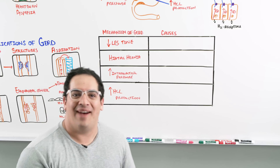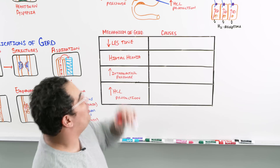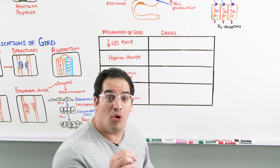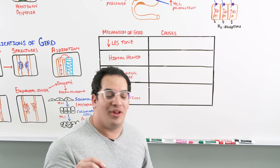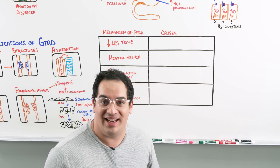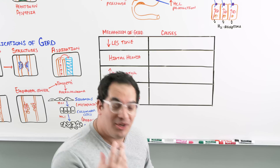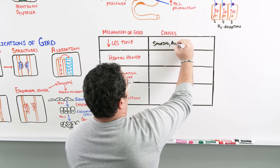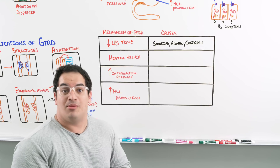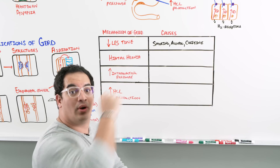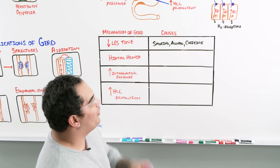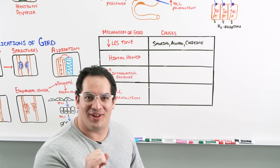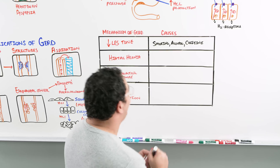What decreases lower esophageal sphincter tone? The patient smoking, drinking alcohol, or consuming a lot of caffeine — these are very common triggers that lower esophageal sphincter tone. For hiatal hernia, the most common type associated with GERD is the sliding hernia.